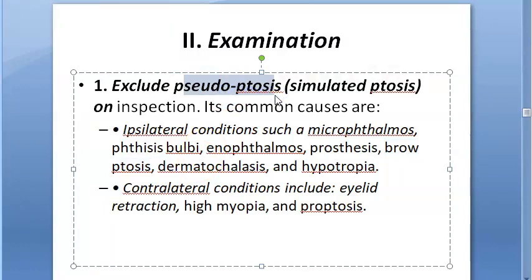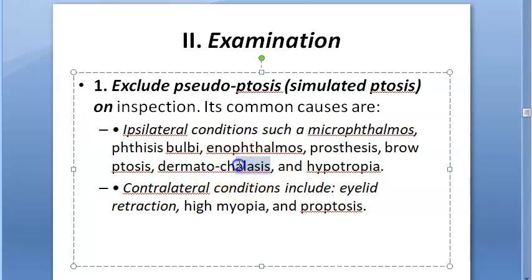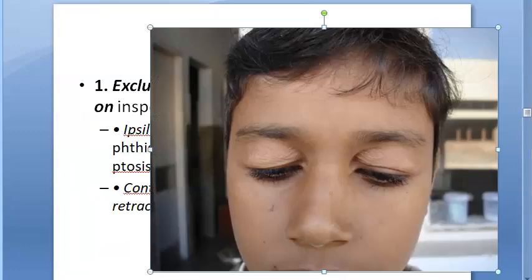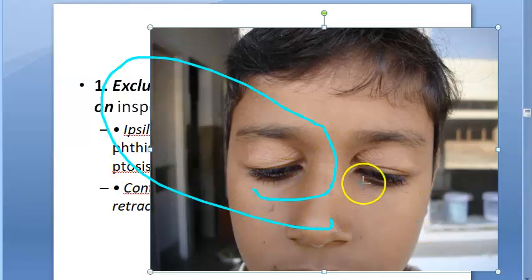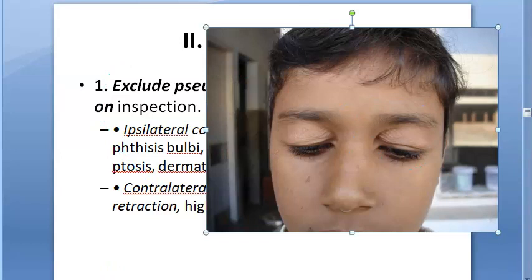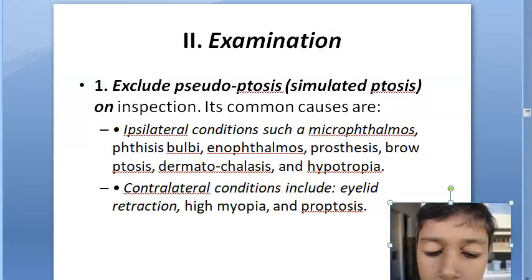Dermatochalasis is another cause of pseudo-ptosis. This is a condition where the eyelid has a lot of folds and creases, as you can see in the image. Because of this, it can appear like ptosis, or it can actually cause ptosis. This is an acquired cause.